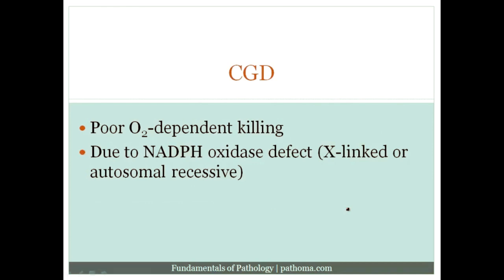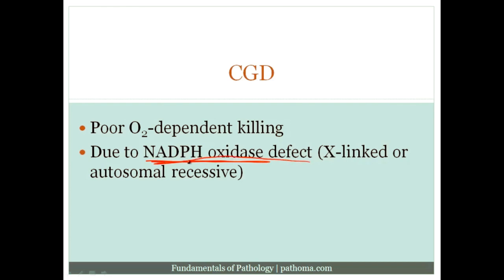In chronic granulomatous disease, you get poor O2-dependent killing. Because O2-dependent killing is defective, the patient then gets chronic granulomas and regular infections. The defect is due to NADPH oxidase — this could be X-linked or autosomal recessive — but the key problem is that there is an NADPH oxidase defect.